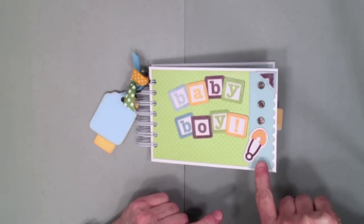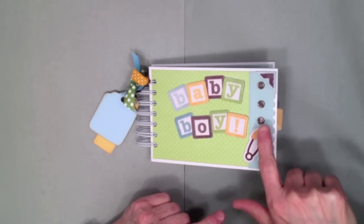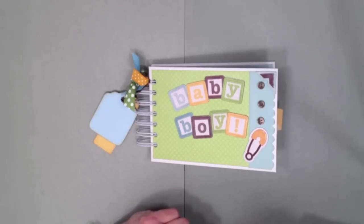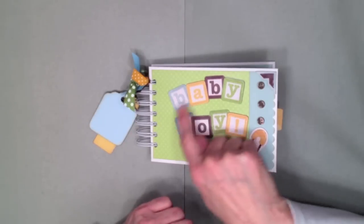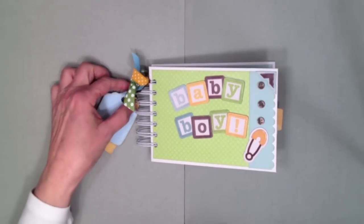I added a strip of the design paper here and I did a scallop edge. These three little brown buttons are from Pebbles and this is a little chipboard piece from the collection, same with the diaper pin and the words baby boy.